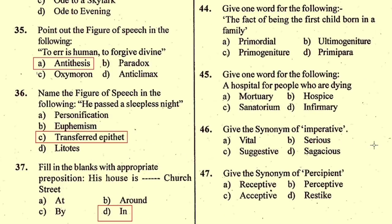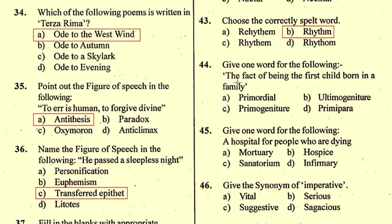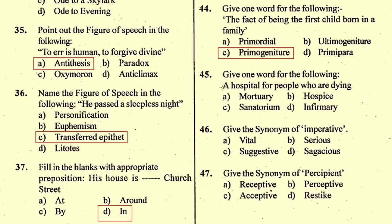Question number 44: Give one word for — 'the fact of being the first child born in a family.' The answer is 'primogeniture', meaning the state of being the firstborn child. Option C is correct. Question number 45: Give one word for 'a hospital for people who are dying.' The answer is 'hospice', H-O-S-P-I-C-E, option B.